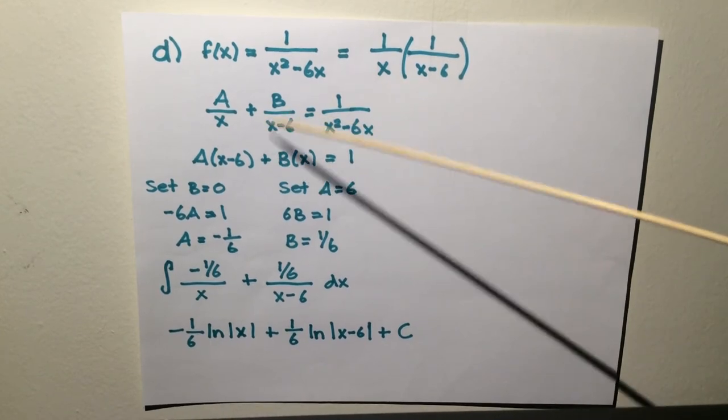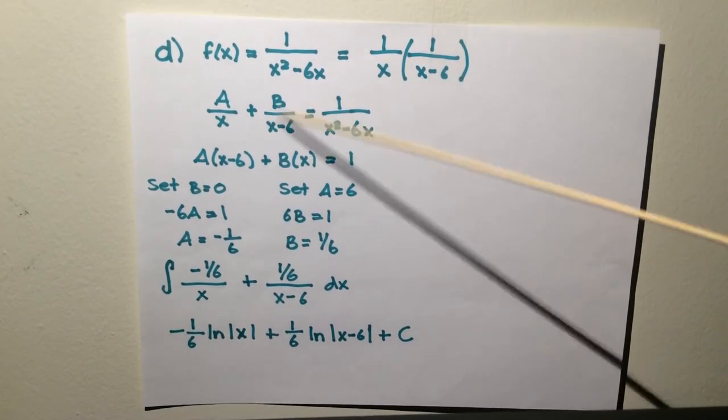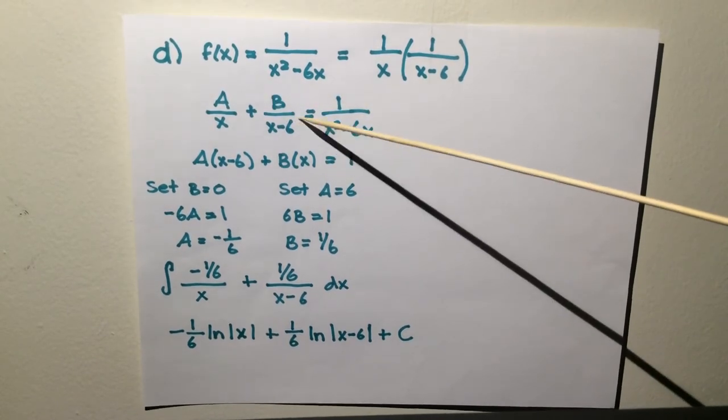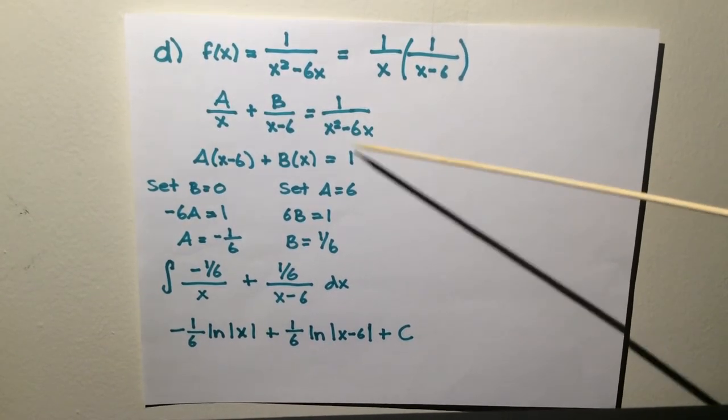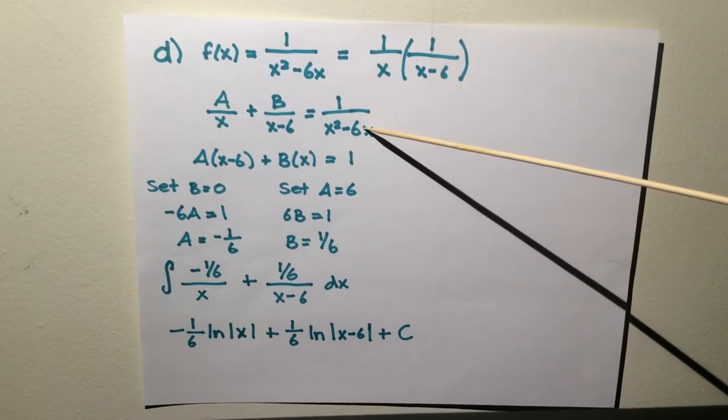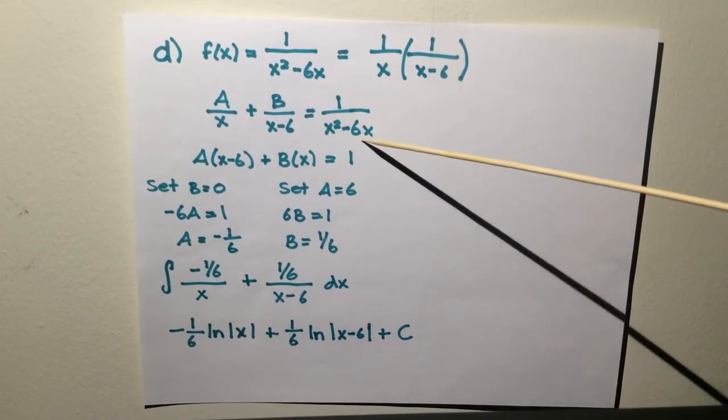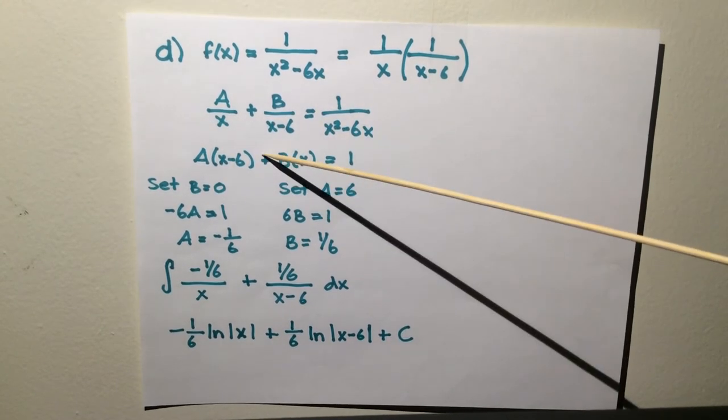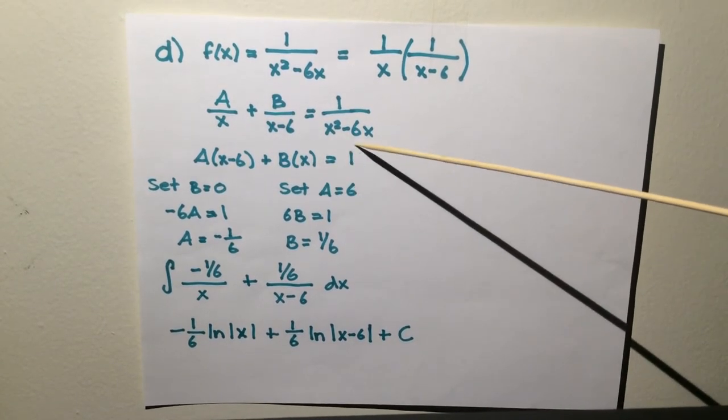Then you set it into the partial fractions setup: a over x plus b over x minus 6 equals 1 over x squared minus 6x. Then you multiply by x squared minus 6x to both sides, and you get a times x minus 6 plus bx equals 1.